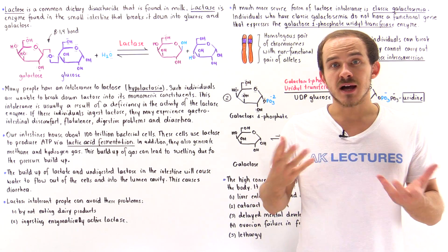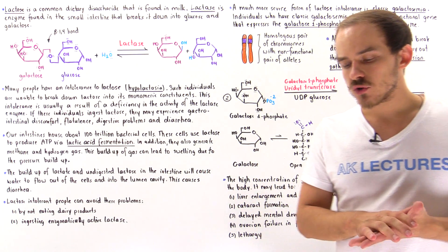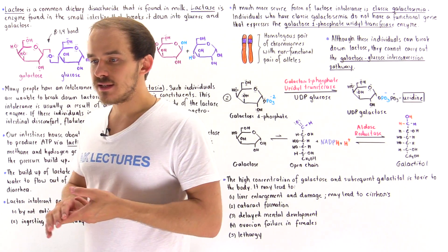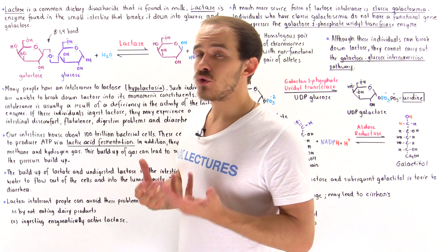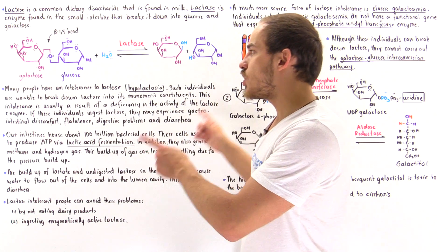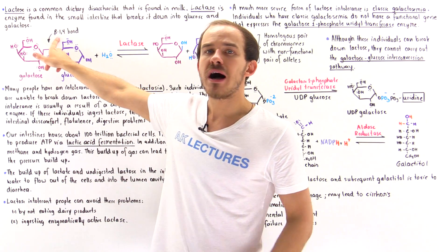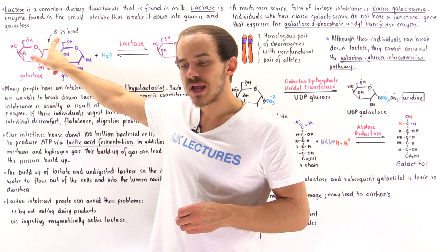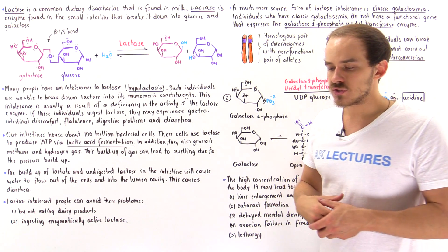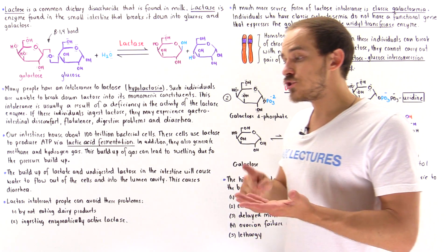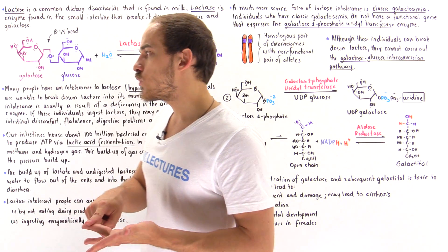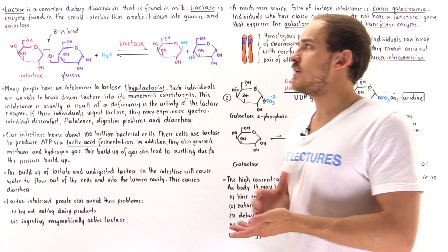Now I'd like to briefly focus on a topic known as lactose intolerance. Lactose is a disaccharide sugar molecule, which means it consists of two individual monosaccharides — galactose and glucose — connected by a special type of bond known as the beta 1,4 glycosidic bond. These lactose molecules are found in milk products and other dairy products, so if you ingest things like cheese, ice cream, milk, yogurt, or sour cream, all these dairy products contain lactose.